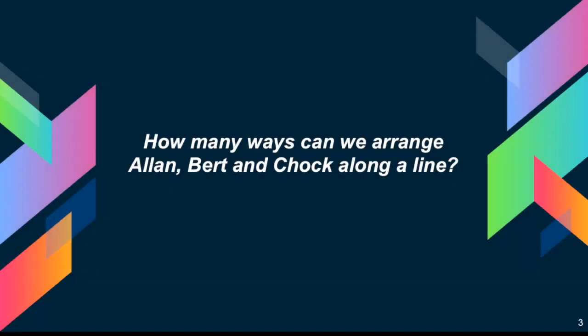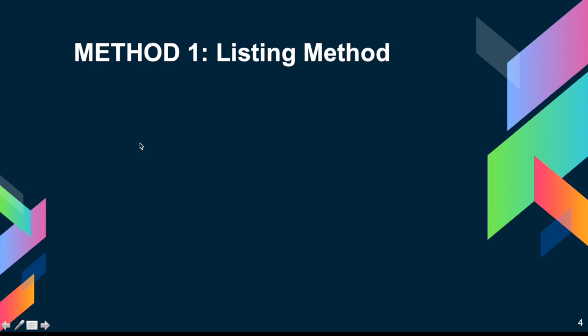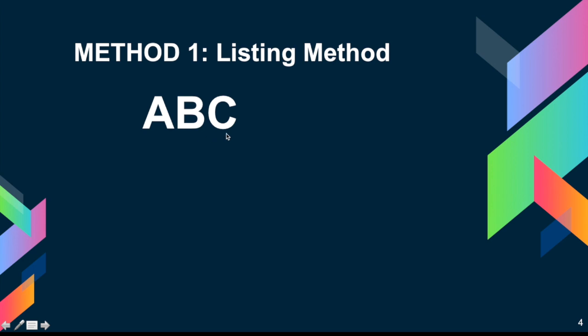Let's try this simple problem. How many ways can we arrange Alan, Bert, and Chok along a line? Imagine they're falling in line. Suppose A is Alan, B is Bert, and C is Chok. The first arrangement you'll think of is A, B, C — Alan is first, followed by Bert, then followed by Chok.